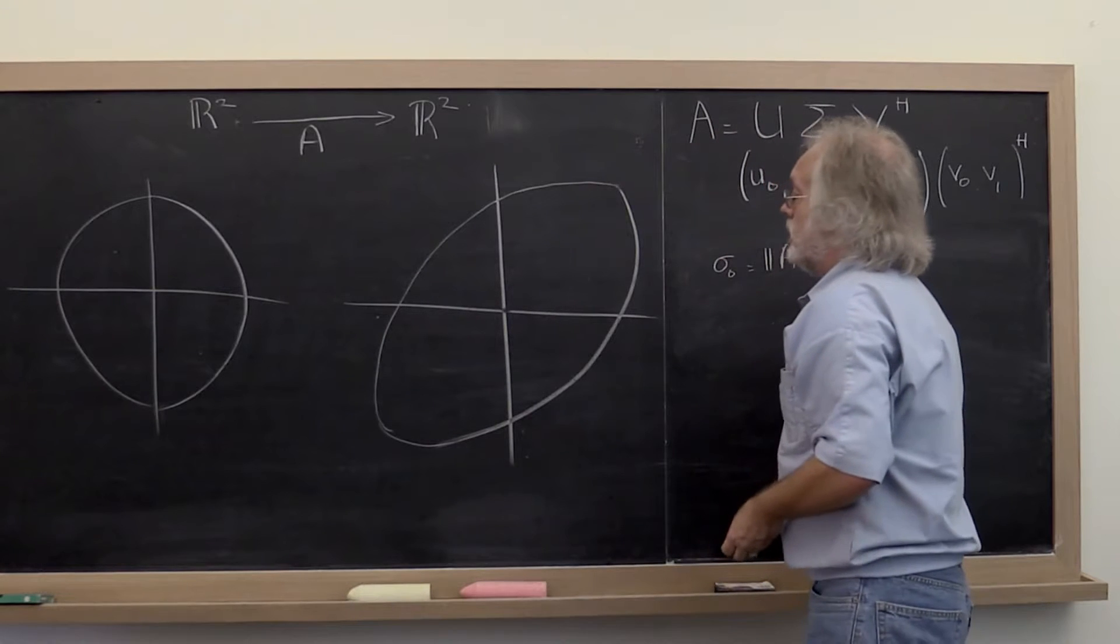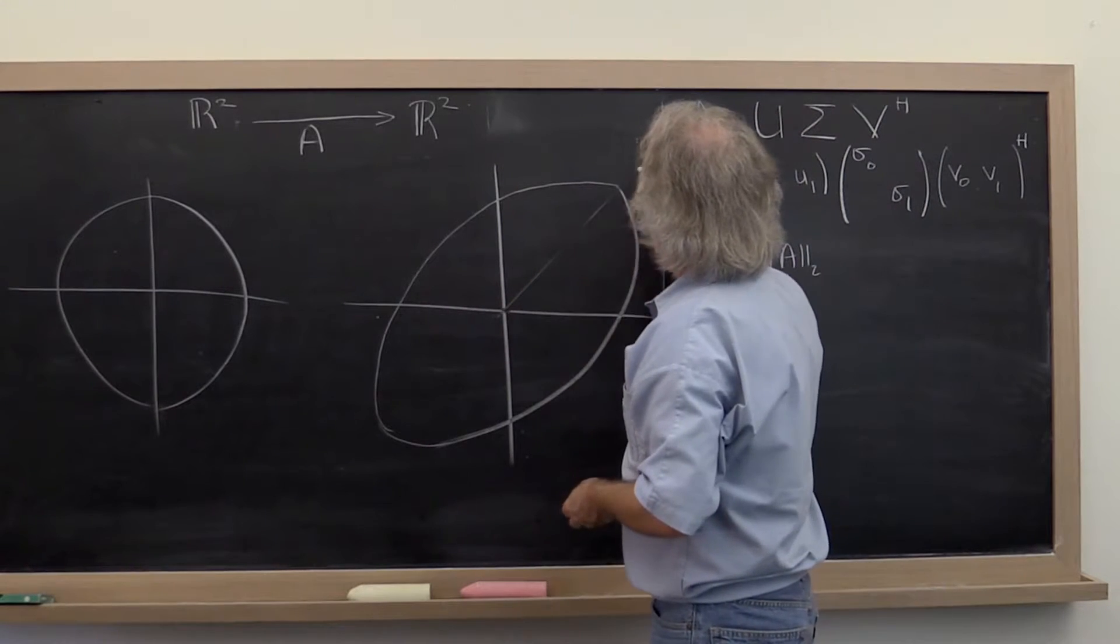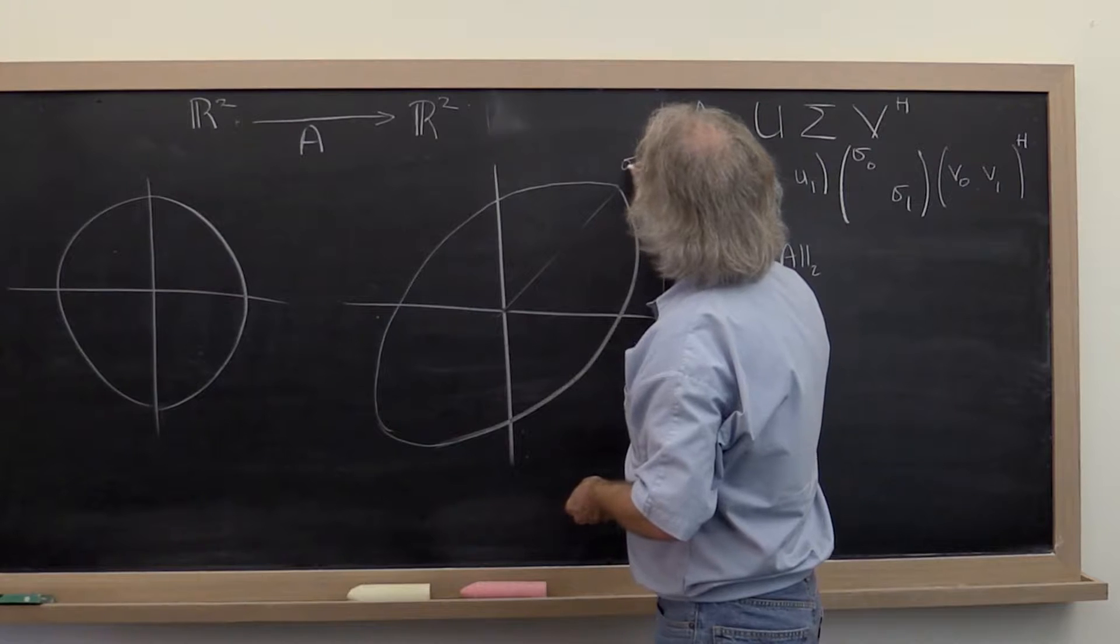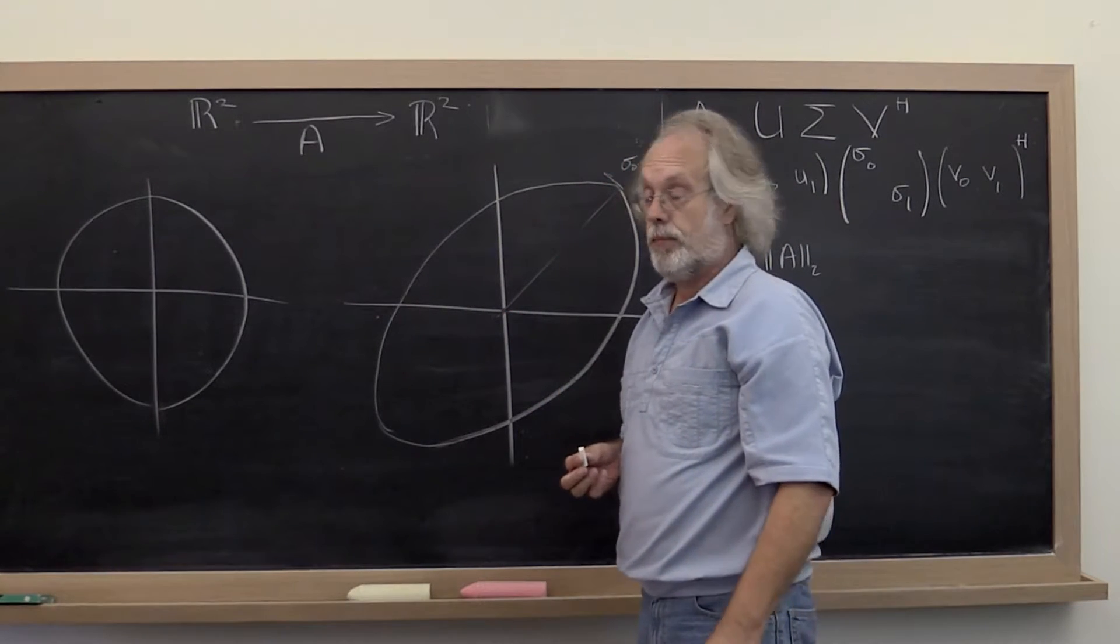So this distance right here is really sigma 0 from here to here.